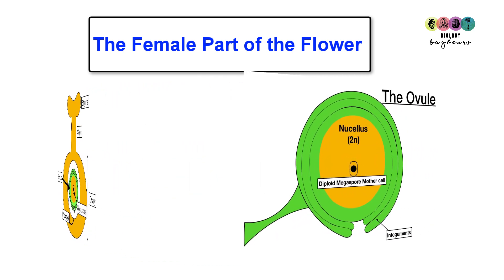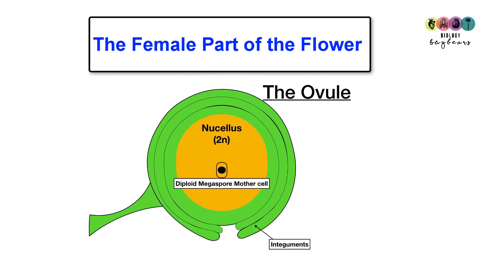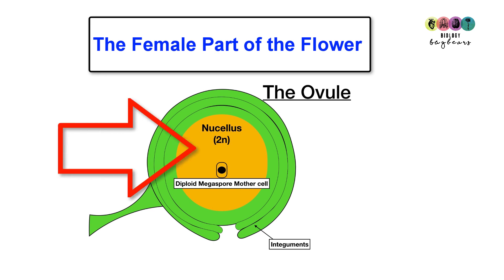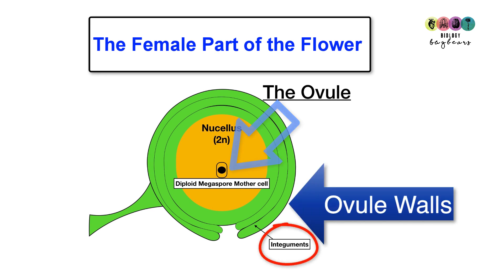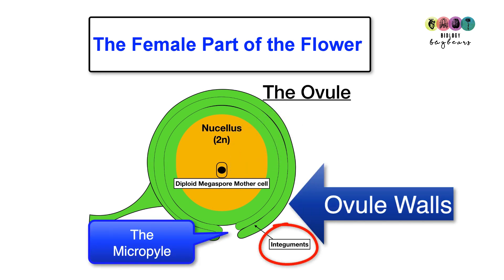Let's take a closer look at the ovule. Inside the ovule is a mass of cells called the nucellus — these are diploid — and inside the nucellus is one large megaspore mother cell, which is also diploid. Surrounding the ovule are the walls called the integuments, and there is a pore in these called the micropyle.